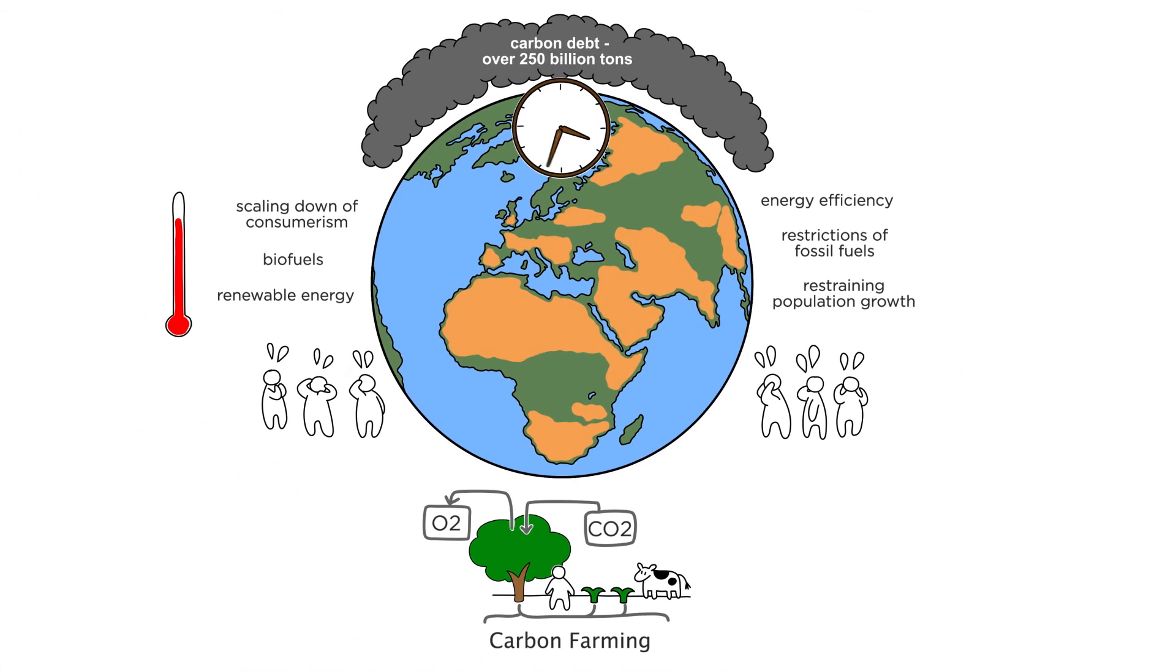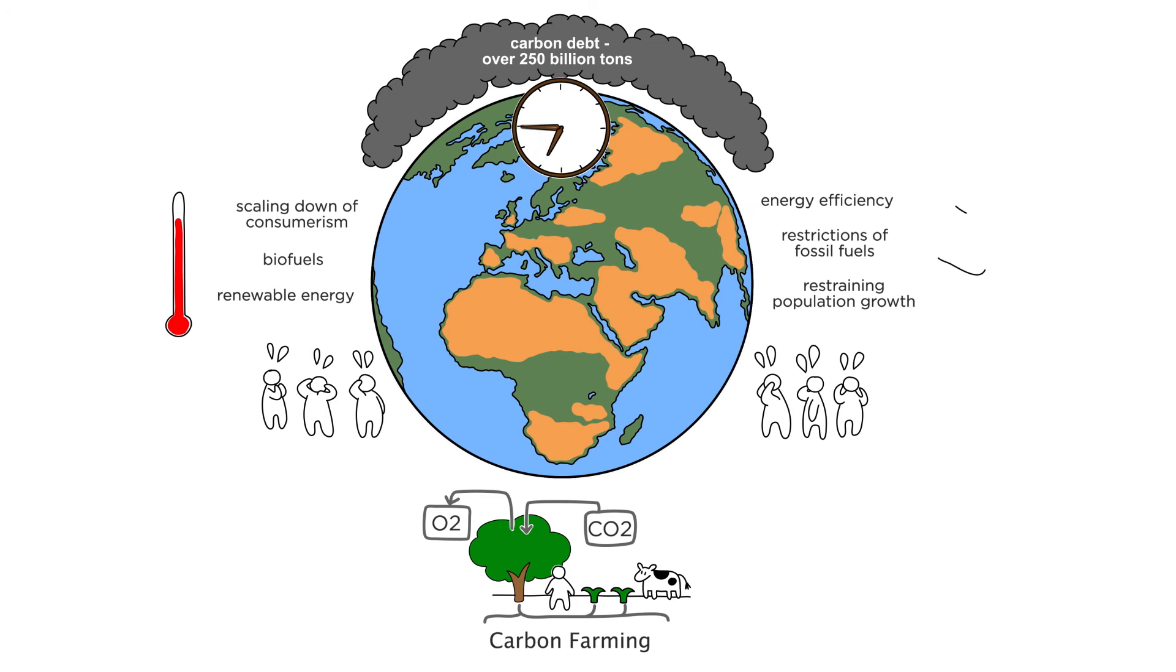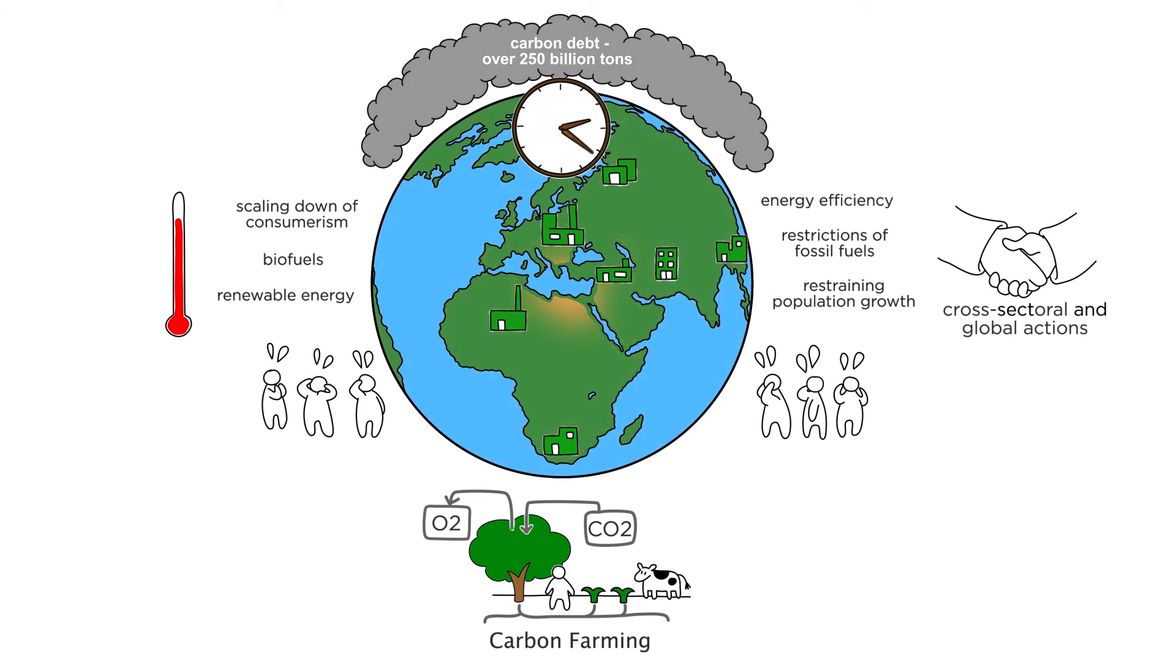Climate change is a global problem, and we need to take all means to solve it simultaneously and on every corner of the Earth. We need a regulatory framework that enables cross-sectoral and global flexibility to mitigate climate change. With this in place, a company could fulfill part of its renewable energy obligation through carbon farming with a greater impact for the environment compared to merely minding their own country's carbon emissions.